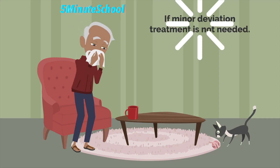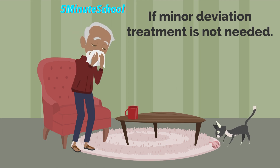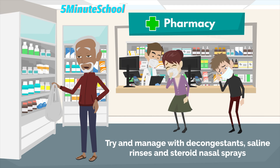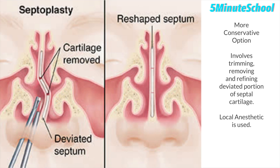Treatment for a deviated nasal septum depends on severity. For minor deviations without symptoms, no treatment is needed. Nasal decongestants, saline rinses, and steroid nasal sprays can help reduce inflammation and manage symptoms. One surgical option is a septoplasty, where the nasal septum is straightened by trimming, repositioning, and replacing the cartilage. It is typically done under local anaesthetic, and involves removing the deviated portion and trimming and straightening the remaining septal cartilage.